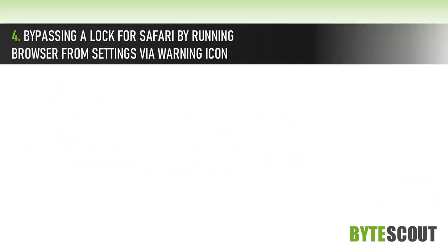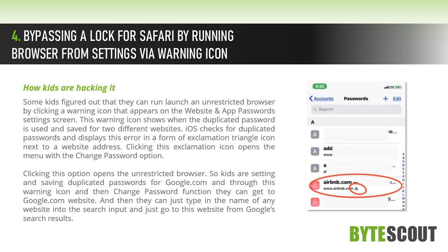Bypassing a lock for Safari by running the browser from Settings via a warning icon. Some kids figured out that they can launch an unrestricted browser by clicking a warning icon that appears on the Website and App Passwords settings screen. This warning icon shows when a duplicated password is used and saved for two different websites.